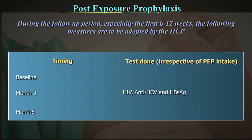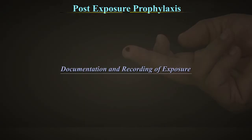Testing timing: at baseline, month 3 and month 6, irrespective of PEP intake, for HIV, anti-HCV and HBsAg. Documentation and recording of exposure: the exposure report details should include date, time and place of exposure, type of procedure done, type of exposure (percutaneous, mucous membrane, etc.), duration of exposure, exposure source and volume, and type of specimen involved.